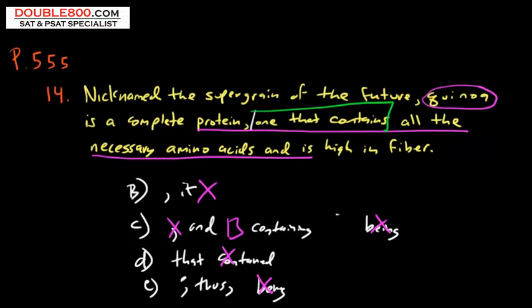Another phrase that might come up is one after the comma: of which. Both of those—one that contains, one of which—perfectly fine. It's not going to be a run-on. It's going to correctly link the sentence. And then we've got all the necessary amino acids and high in fiber. So just remember: one that contains, one of which, perfectly fine. This one is correct as is, and the answer is A. All right, see you next time. Thanks for watching.